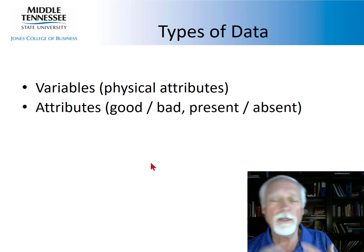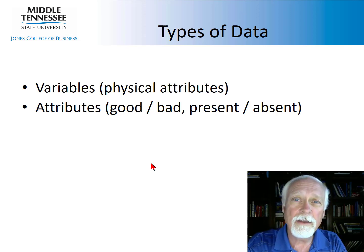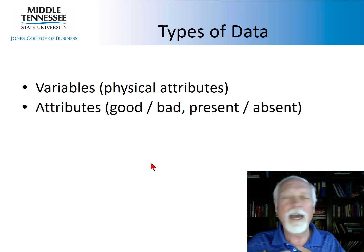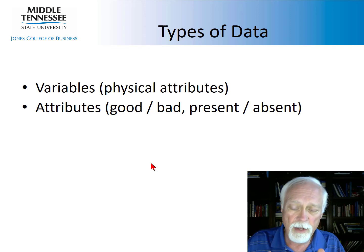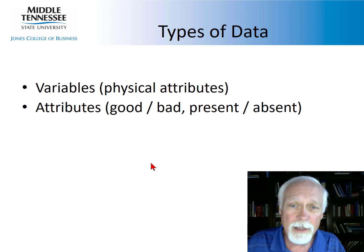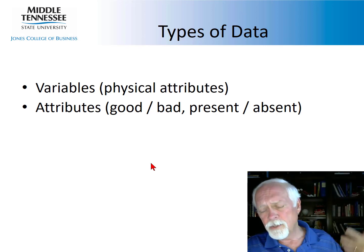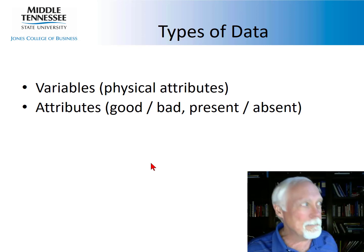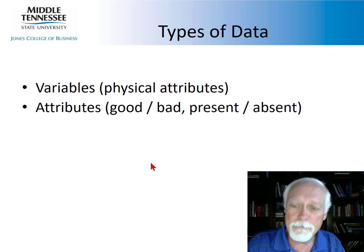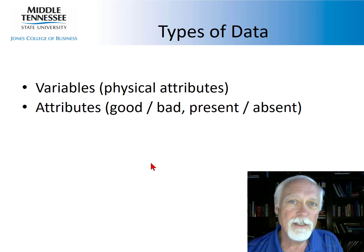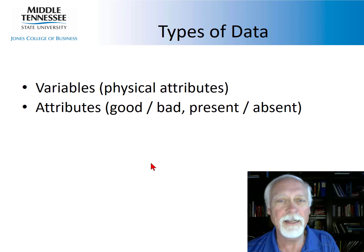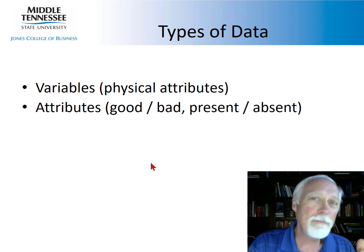Types of data: variable data versus attribute data. Variable data can measure any physical characteristic — it continuously varies. For instance, I have no idea exactly how much I weigh; my scale has a resolution of 0.2 pounds, so I could be anywhere between 199 and 199.2. Variable data can measure height, weight, circumference, relative humidity, barometric pressure, decibels, Richter scale values, Brix (B-R-I-X — a measure of sugar content), durometer (hardness), and viscosity (slipperiness).